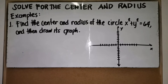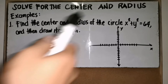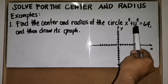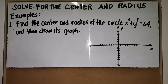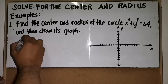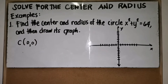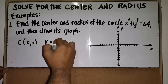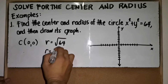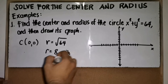Example number 1: Find the center and radius of the circle with the equation x squared plus y squared equals 64, and draw its graph. The equation is in the form x squared plus y squared equals r squared, so the center is at the origin, or coordinates (0, 0). For the radius, we get the square root of 64, which equals 8 units.